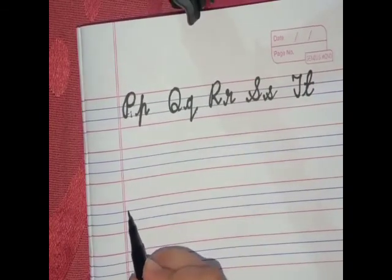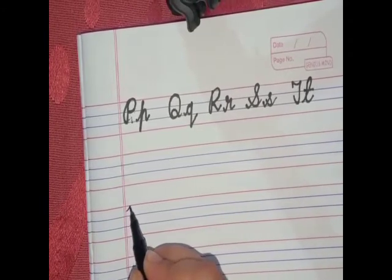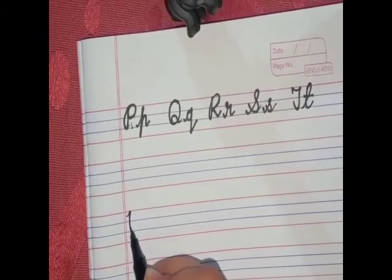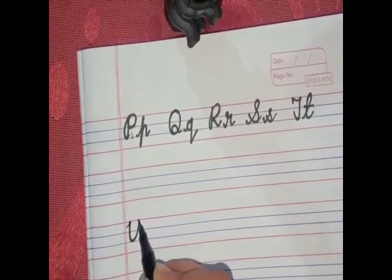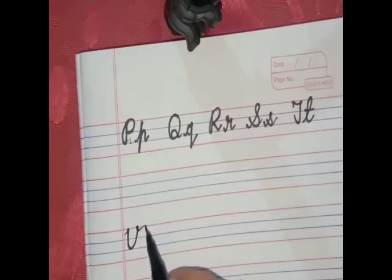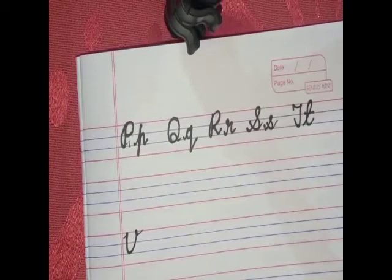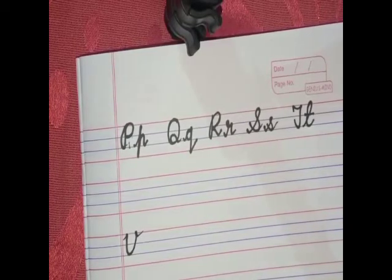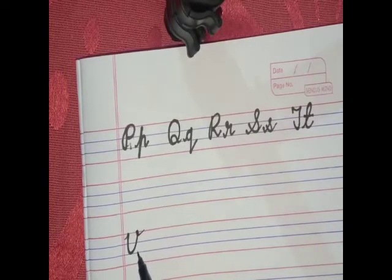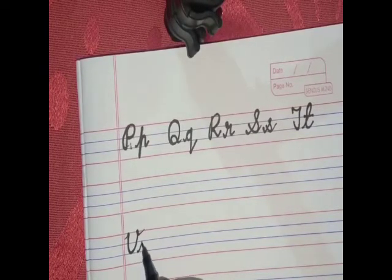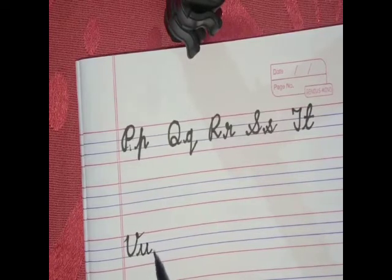Formation of capital U: draw a straight line coming down to the third line, then make a curve, and it will go again up to the first line and comes down to the third line. Formation of small u: it is the same as capital U children, but written in the middle lines only, just like this.